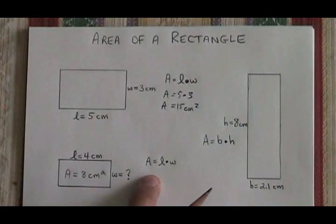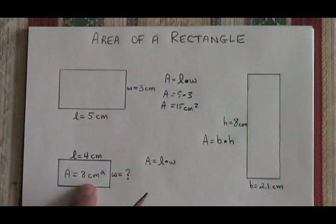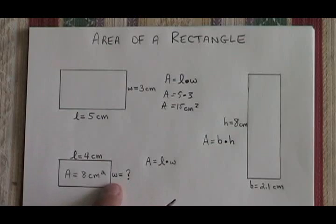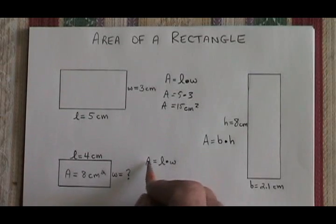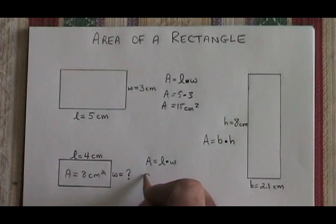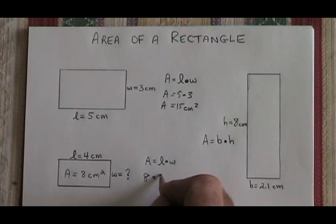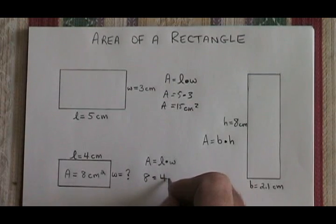In this rectangle, we're given the area of 8 centimeters squared, and the length is 4 centimeters. We'd like to know the width, so we fill in our formula. A is replaced by 8 equals L is replaced by 4, and W is our unknown.